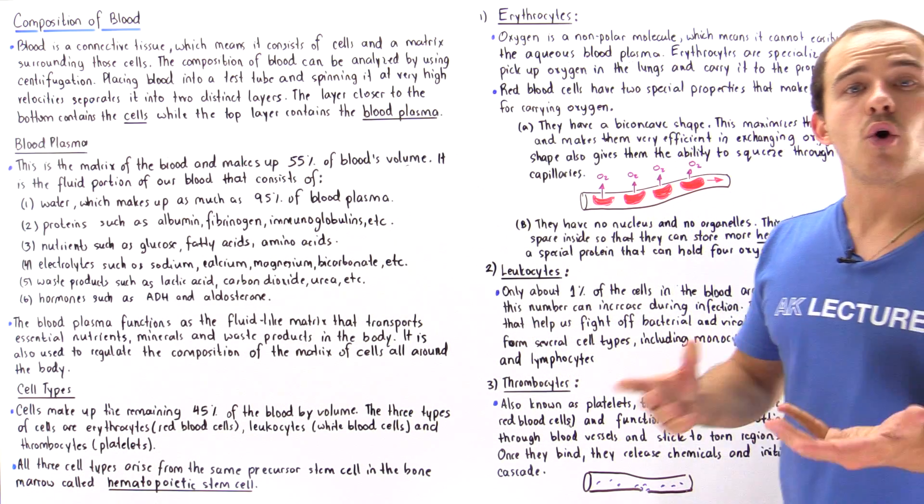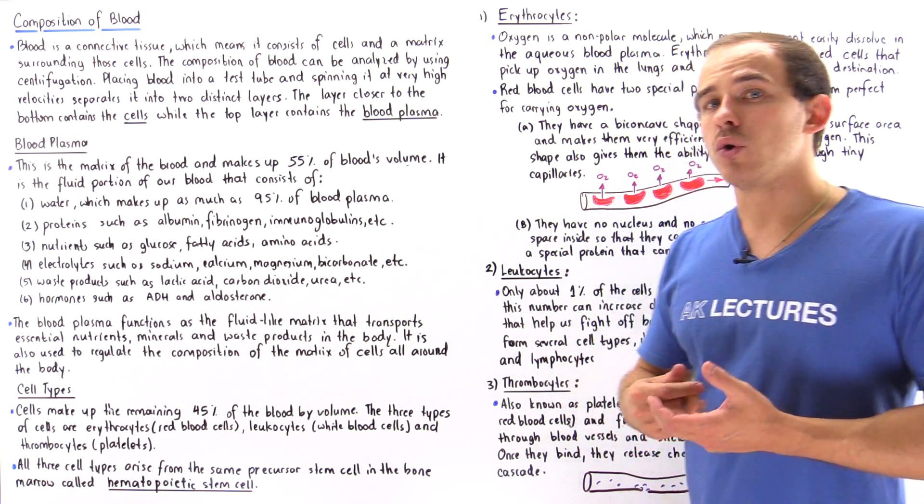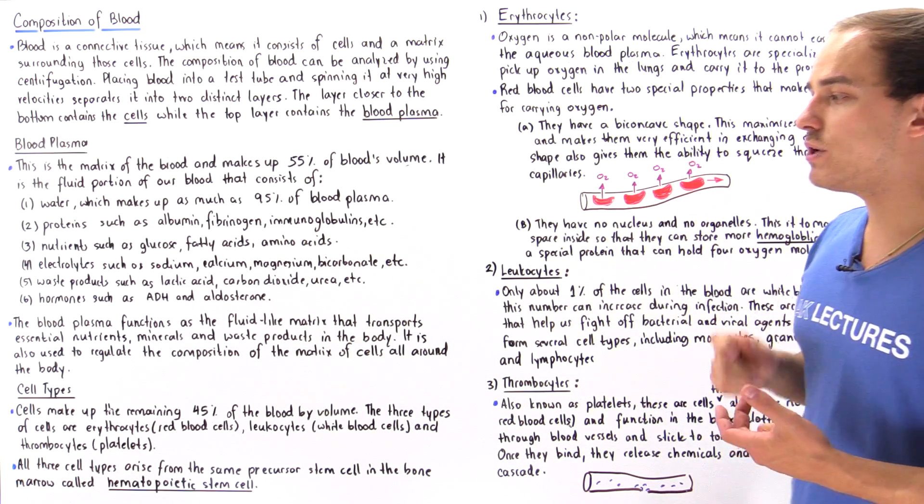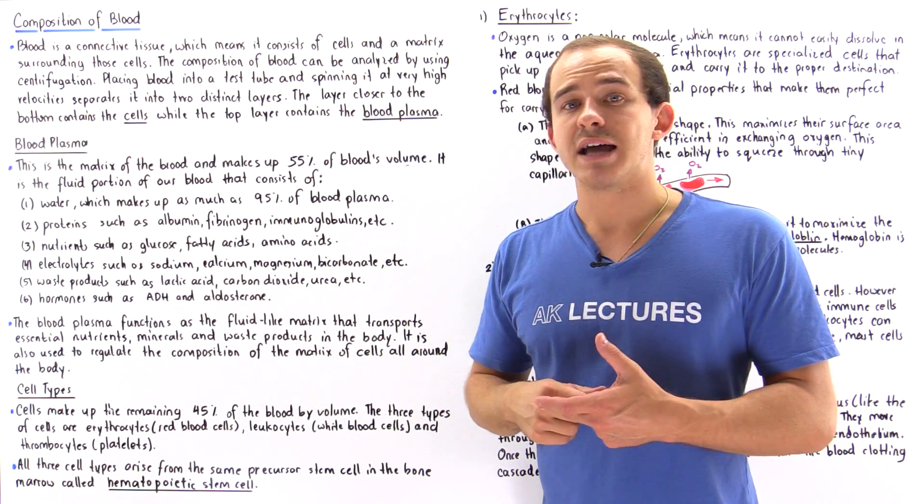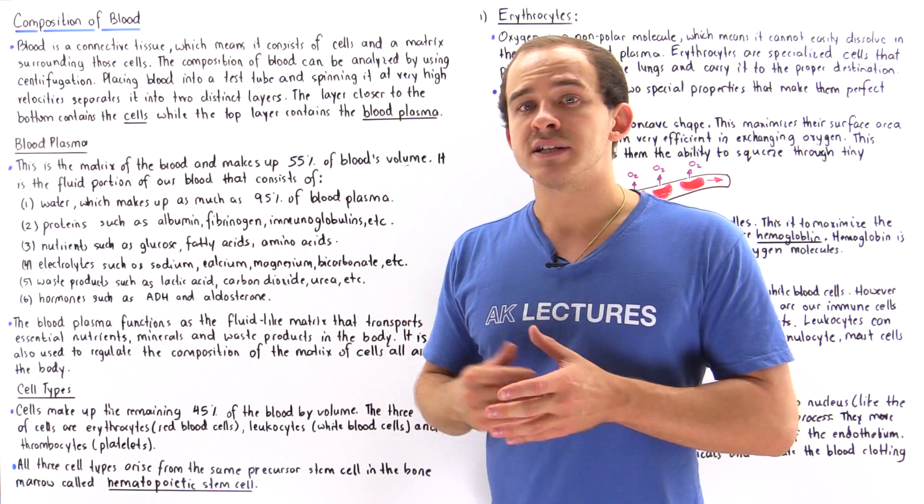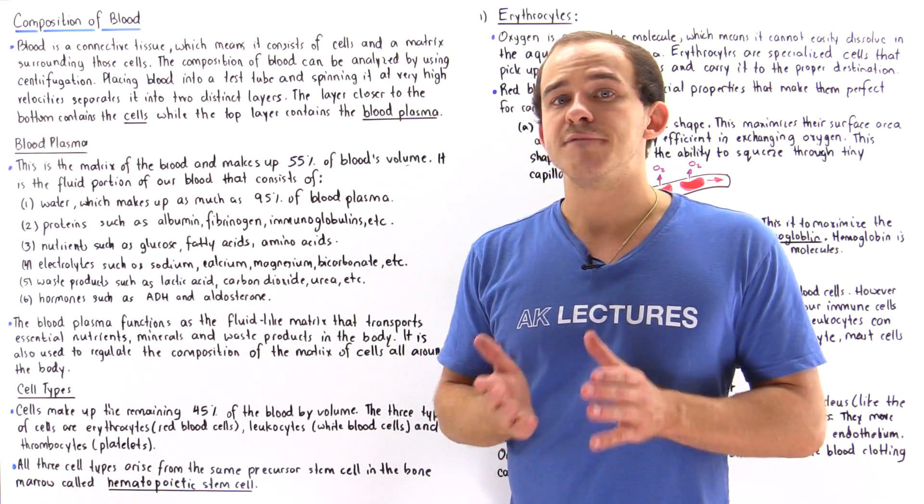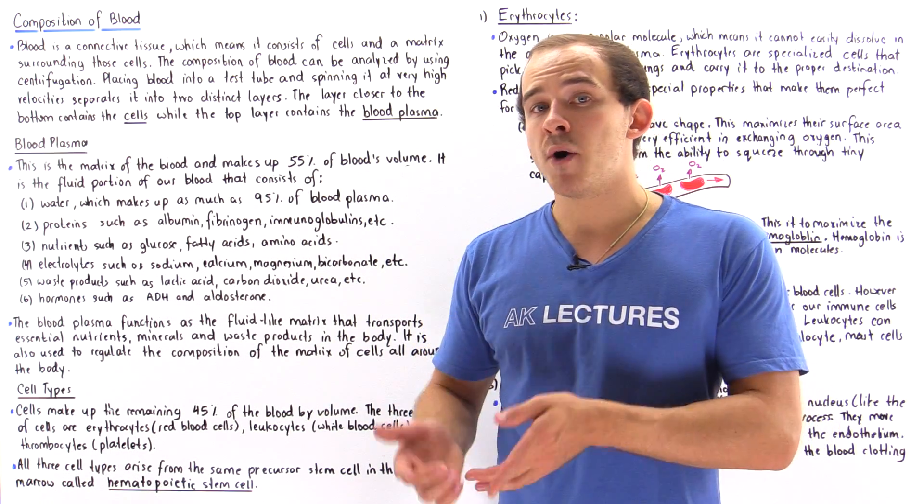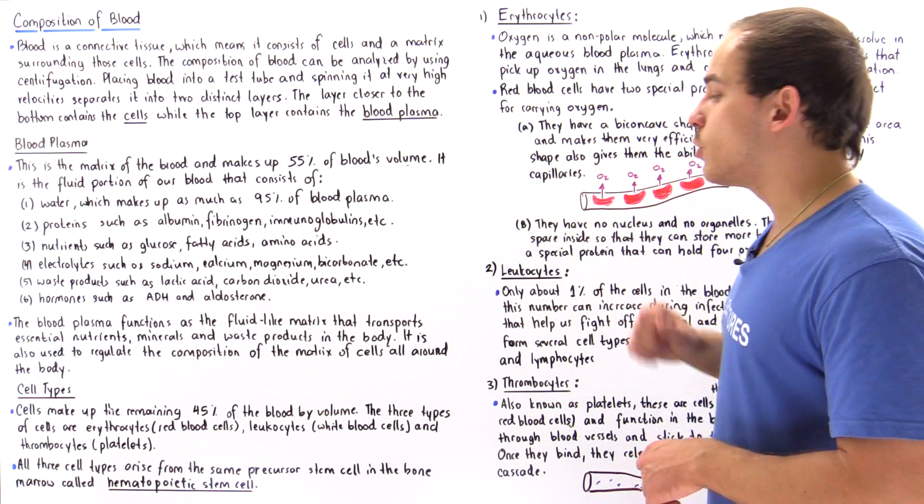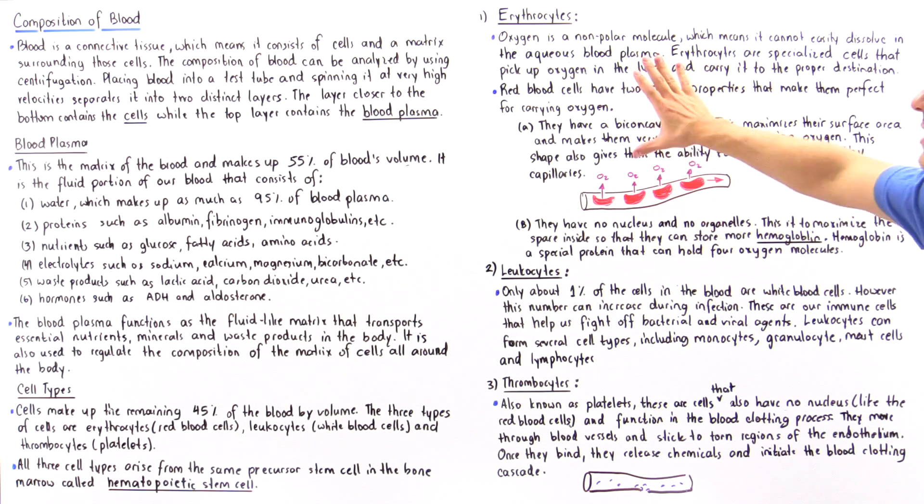Now what types of cells are found inside our blood? Well we have red blood cells, also known as erythrocytes. We have white blood cells, also known as leukocytes. And we have our thrombocytes, also known as platelets. And all these three different types of cells arise from the same exact stem cell found in the bone marrow of our bone known as the hematopoietic stem cell.